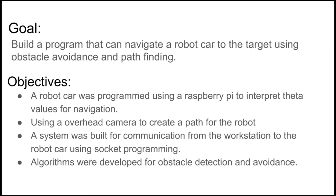In order to do that, we programmed a Raspberry Pi to interpret data values for robot navigation. We also used an overhead camera that could take in all the information of all the objects and the surrounding obstacles on the map and then be able to create a path for the robot to take from one place to another place.